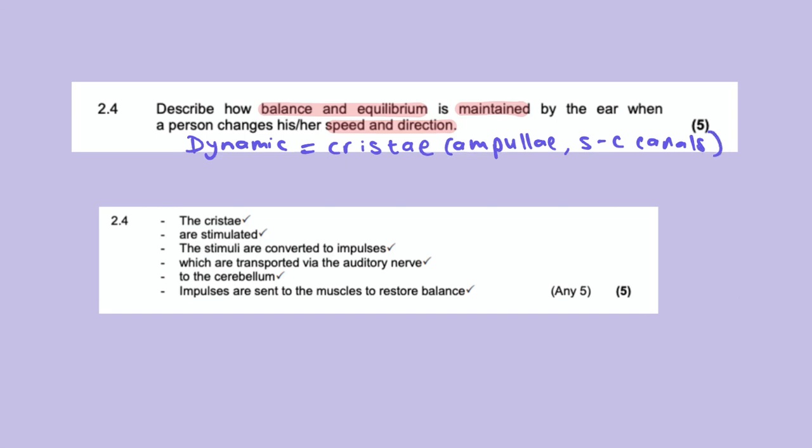So I'll say they're semicircular canals. So I'm just writing down what I know. I'm identifying what type of balance it is. So now if you look at the memo, not all of those things will be marks. Like dynamic balance won't be a tick in the memo. Won't necessarily need to say ampoule or semicircular canals. But I would always rather write too much than too little. So first tick here. The cristae are stimulated. You've got to say they're stimulated. The stimulus is converted into a nerve impulse, which is transported on the auditory nerve to the cerebellum. Impulses are sent to muscles to restore balance. So even if you've got those last four, you get four out of five, even if you didn't get the cristae right. So it's absolutely key that these four marks you write every single time, no matter what type of balance or equilibrium question you are asked.